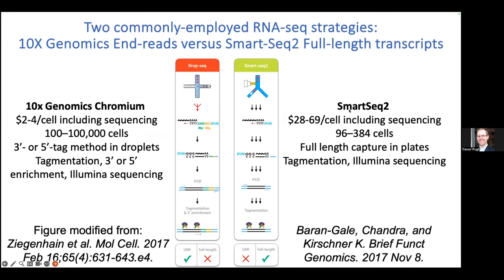SmartSeq2 is much more labor-intensive and expensive per cell because it's plate-based. You put single cells into individual wells in a plate, each with individual barcodes, lyse the cell, barcode all the RNA, and sequence it. The benefit is you can do reverse transcriptions and read the entire transcript — not just end reads. So if you're interested in full-length RNA, SmartSeq2 is the technique to use. Both of these use Illumina sequencing, but you don't have to — you can use long reads from nanopore or PacBio. It's really a question of whether you need to reconstruct the whole transcript or if short reads will suffice.